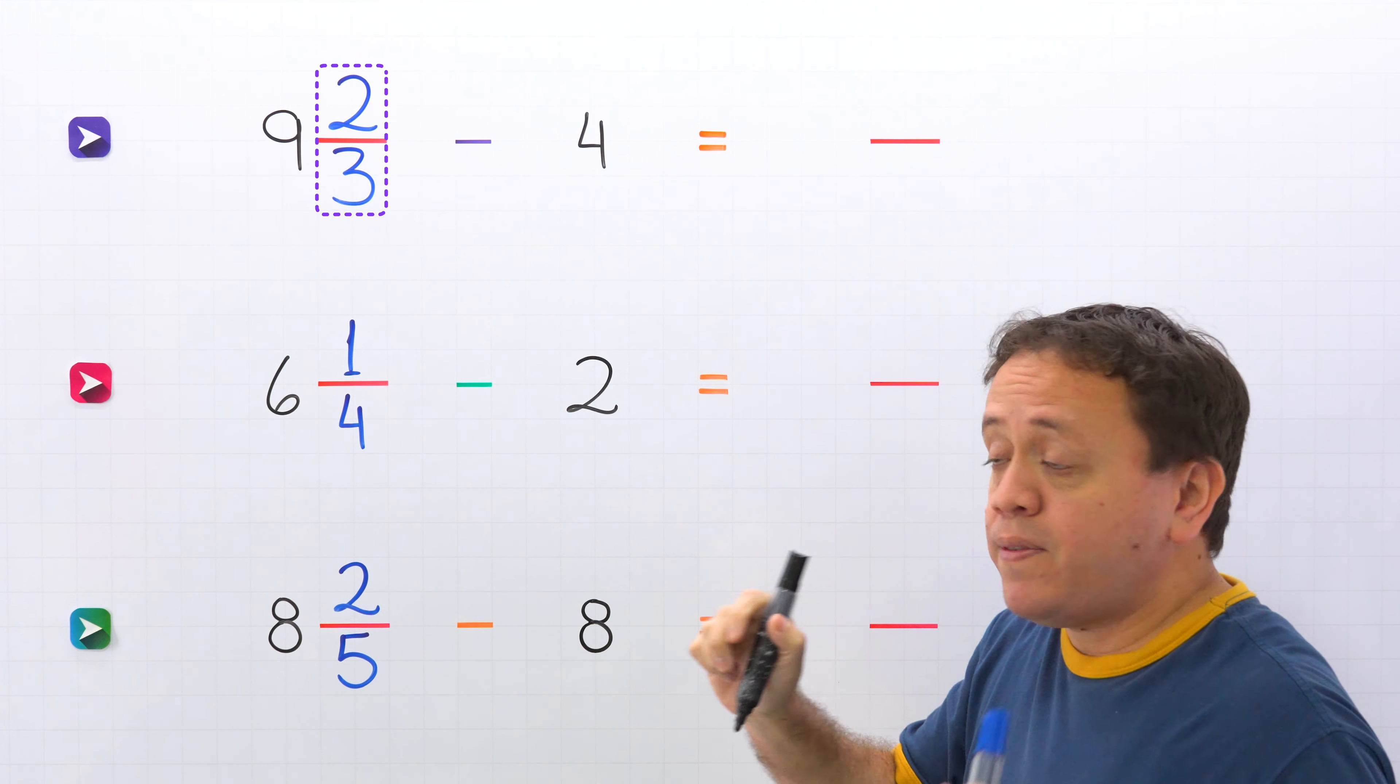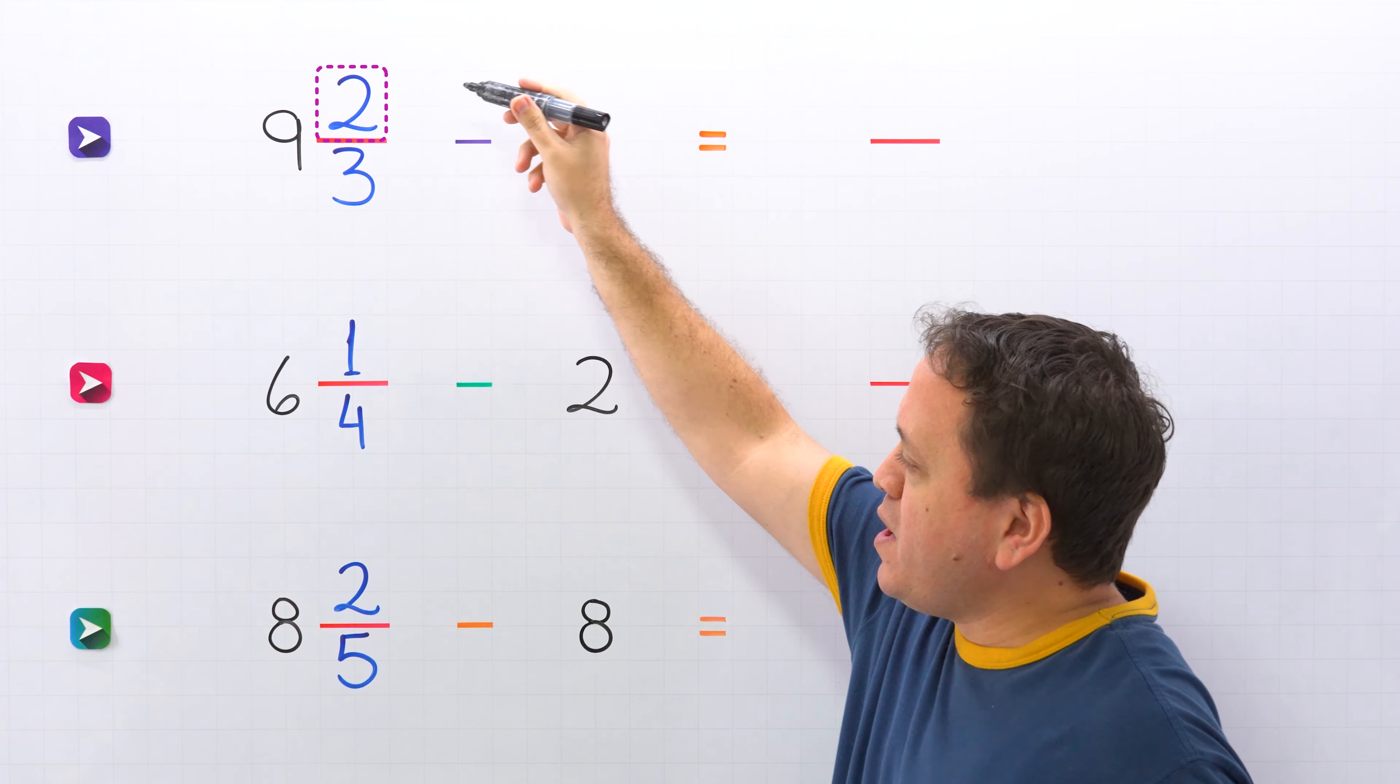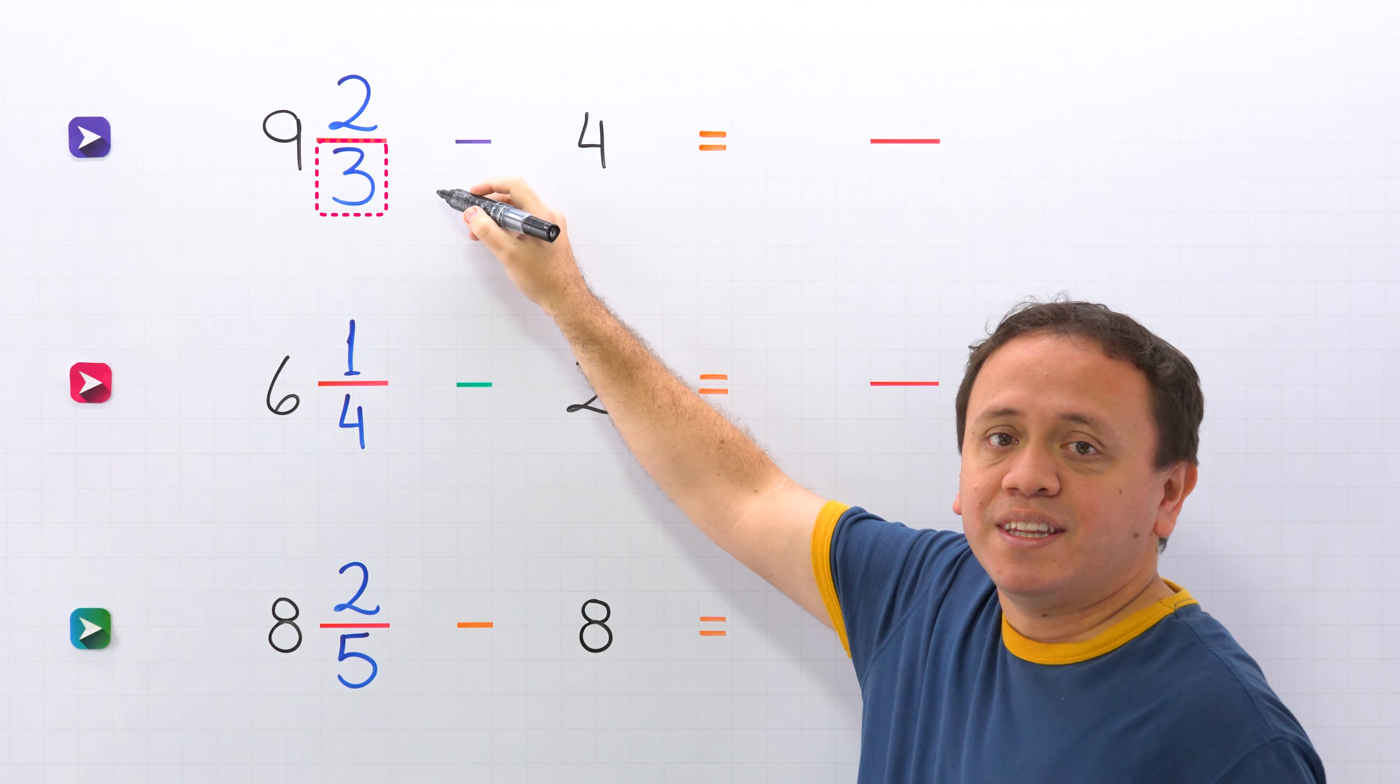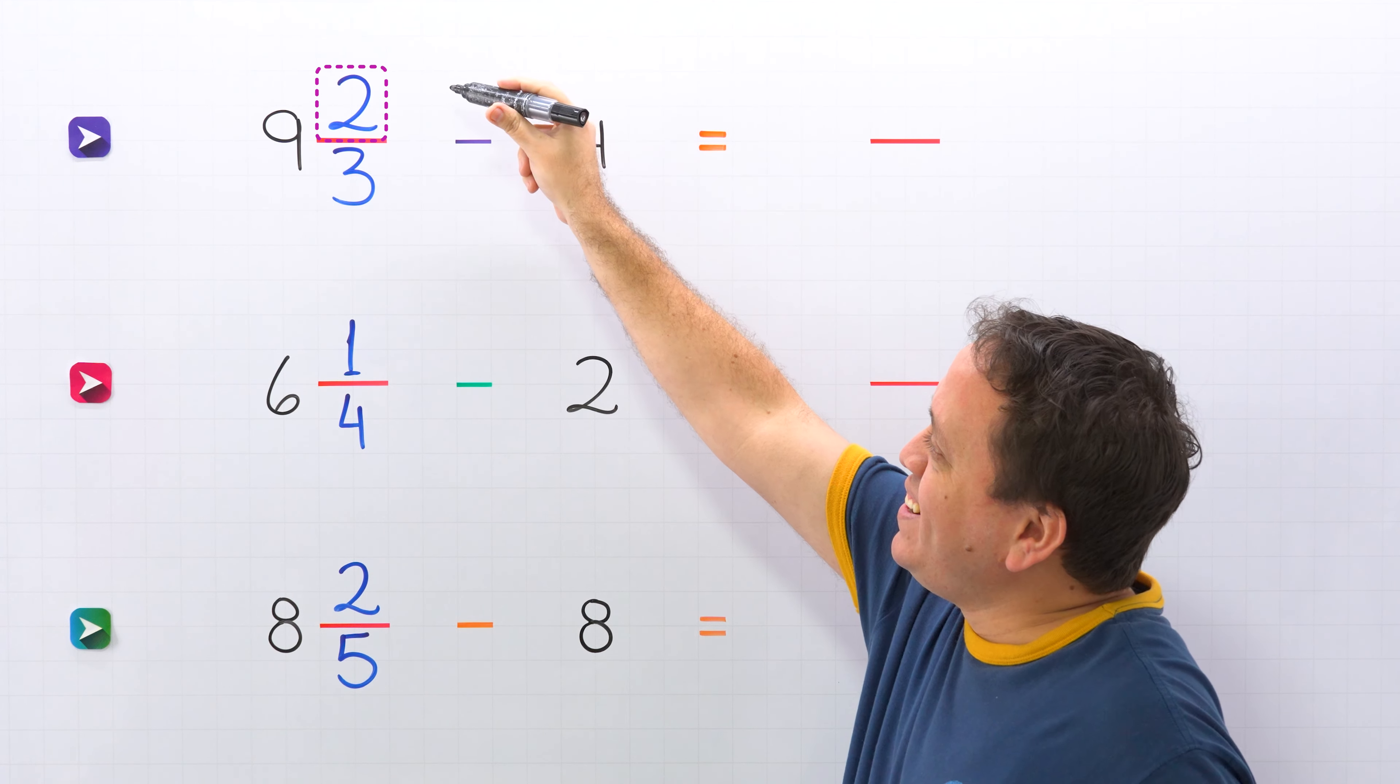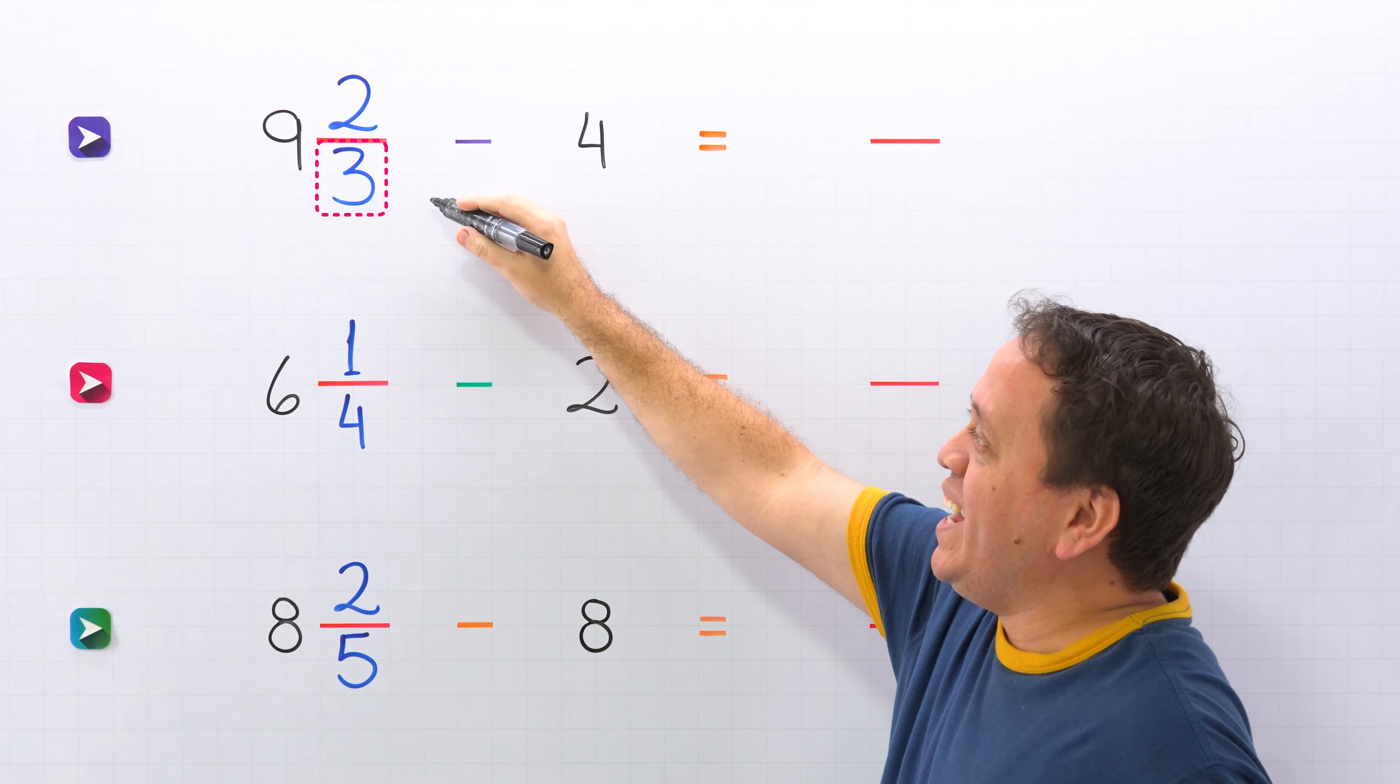Also a proper fraction is a fraction where the numerator, the top number, is less than the denominator, the bottom number. Two thirds is a proper fraction, given that the numerator two is less than the denominator three.